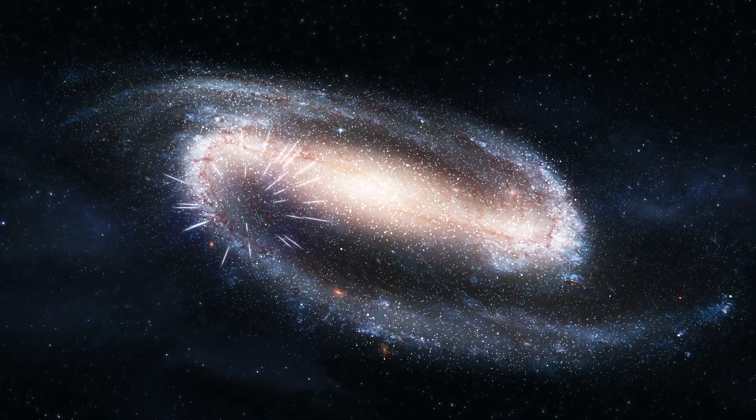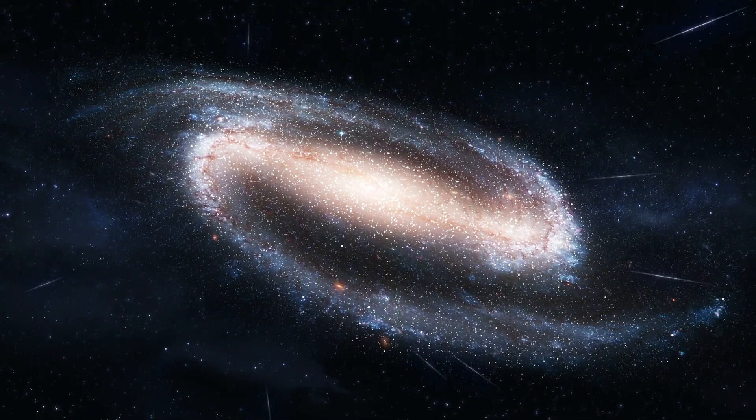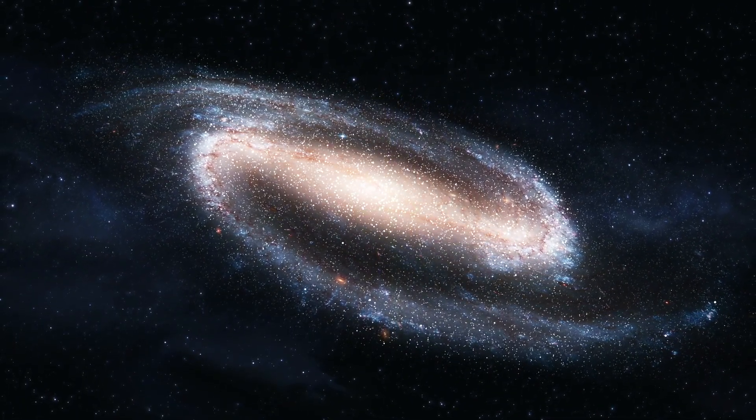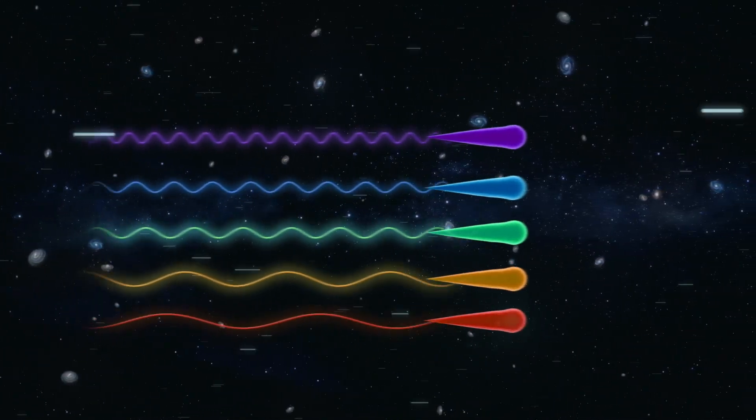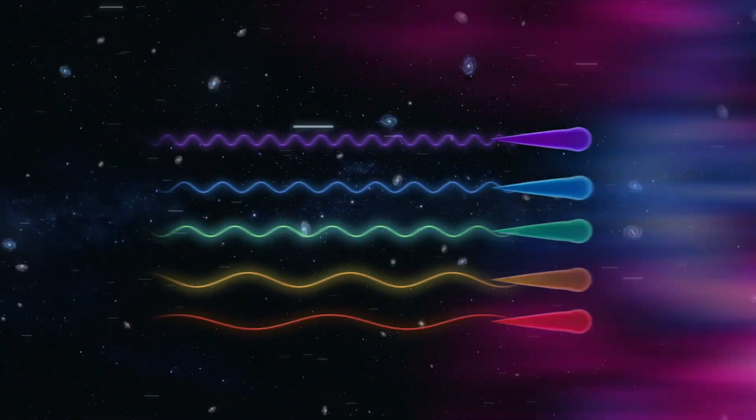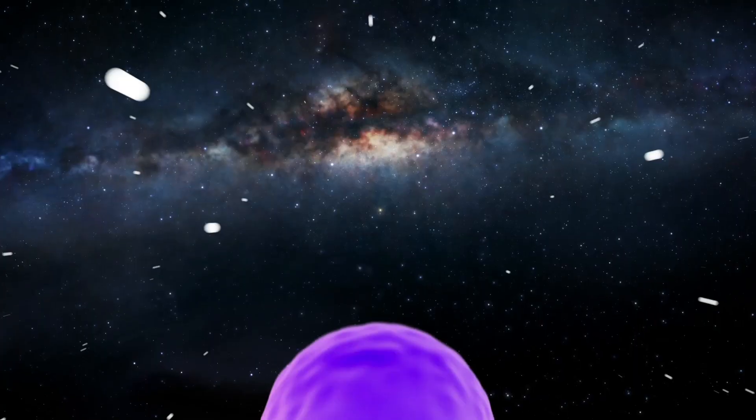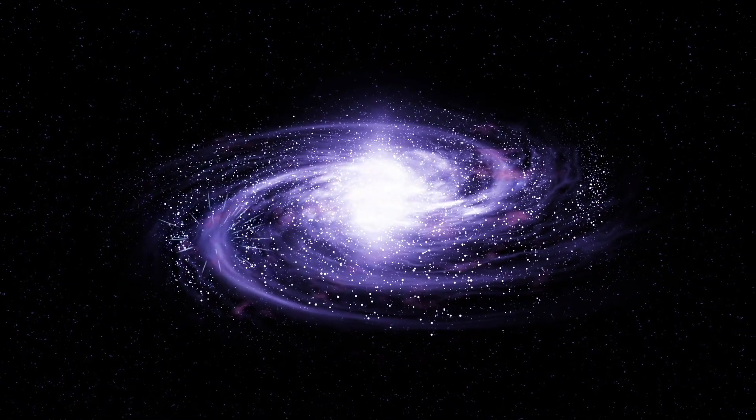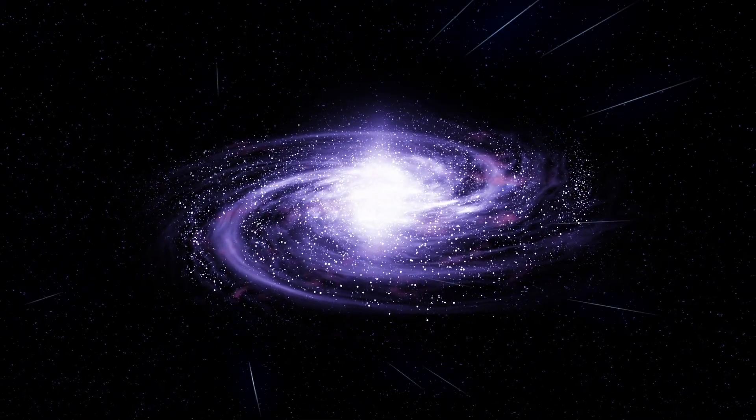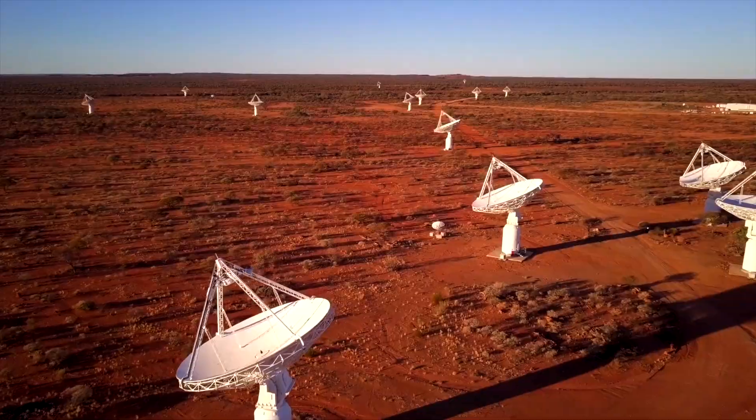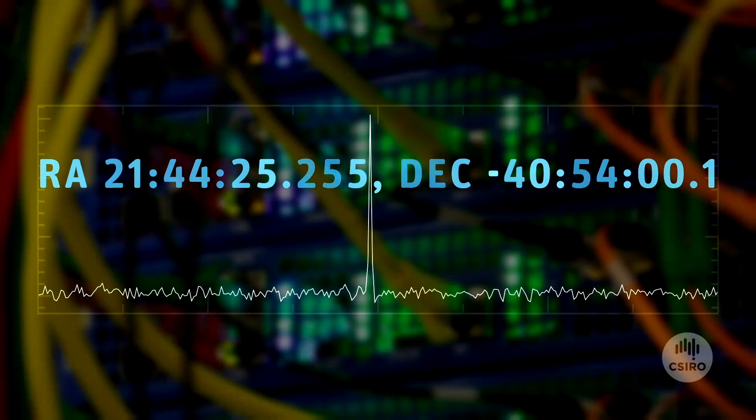Since their discovery in 2007, the origin of fast radio bursts, or FRBs, short, powerful flashes of radio waves from distant galaxies, has intrigued astronomers and the public. Most FRBs are extremely fleeting, one-off pulses, lasting just milliseconds, making it challenging to pinpoint their origins.